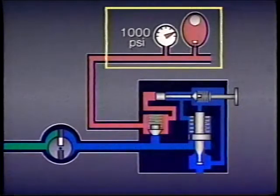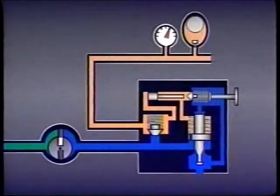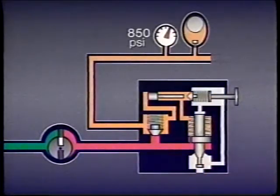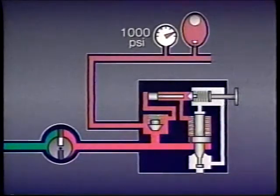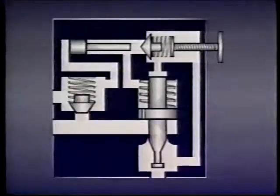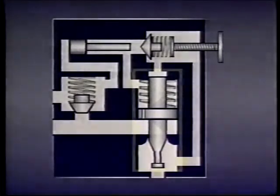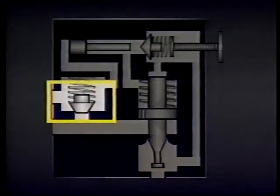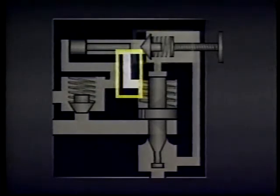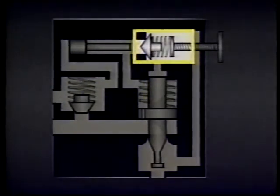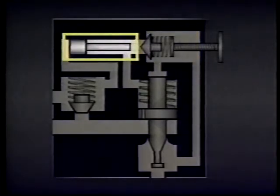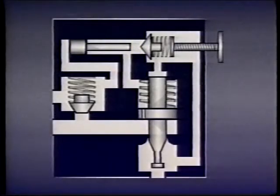In this system, the valve opens and unloads to tank when the accumulator is fully charged at 1000 psi. As the energy in the accumulator is used up, pressure upstream of the check valve drops. When pressure drops to 850 psi, the valve closes and flow from the pump fills the accumulator again. This special relief valve includes a main valve spool, a check valve, a pilot line, a spring-biased pilot valve dart, and a differential piston. They work together to enable the valve to open and close as pressure rises and falls.